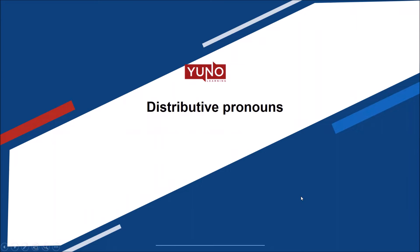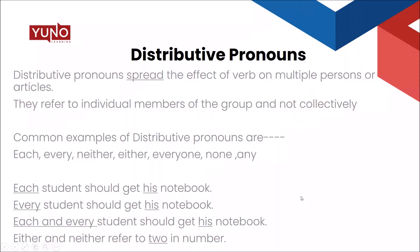As the name indicates, distributive pronouns show the spread or distribution of the effect of the verb on multiple persons or articles. They denote individual members of a group and not the collection itself. Distributive pronouns always refer to any single parameter or quantity specifically, in a singular manner.